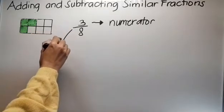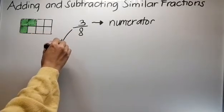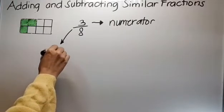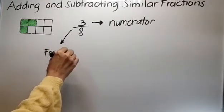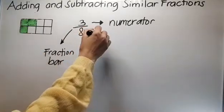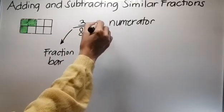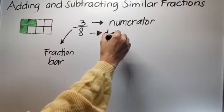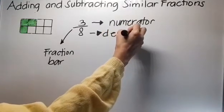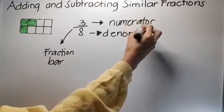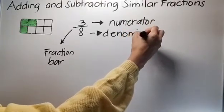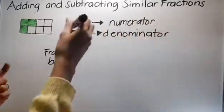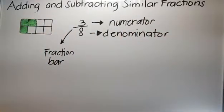Itong line na to ay tinatawag natin fraction bar. Yung number dyan sa baba, ito yung tinatawag natin denominator.